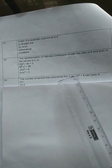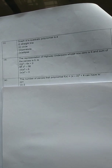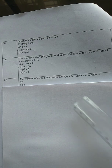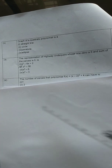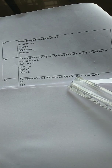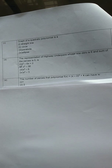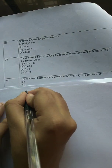The number of zeros that the polynomial f of x equals x minus 2, the whole square plus 4, can have. We have already studied that a polynomial's degree gives the maximum number of zeros. This is in standard form, so we expand using the a minus b whole square formula.